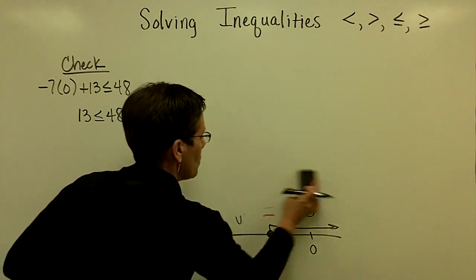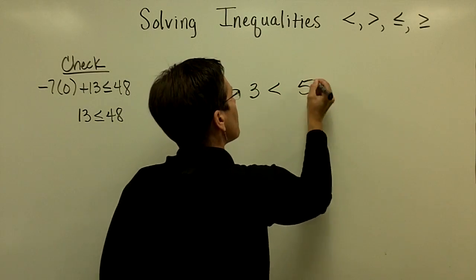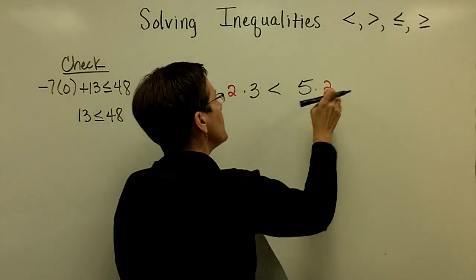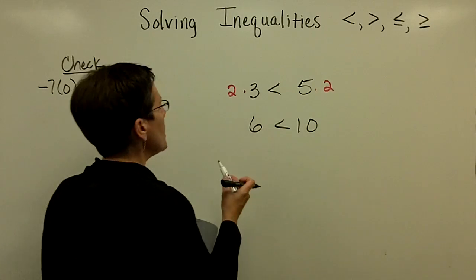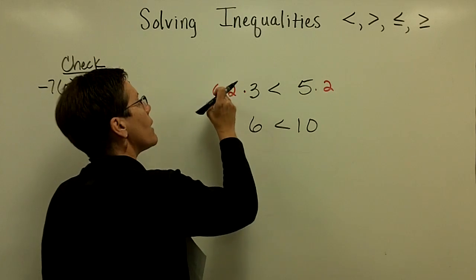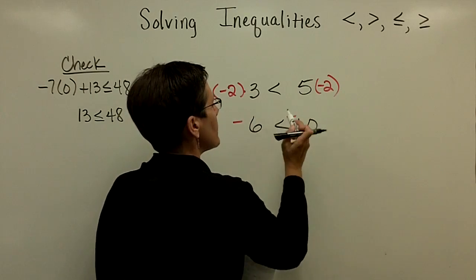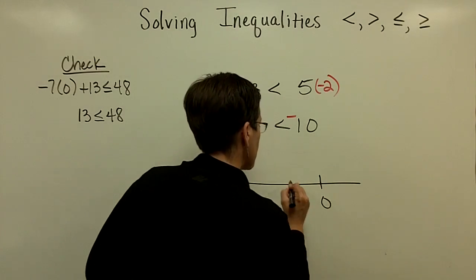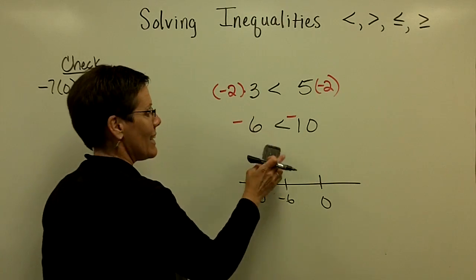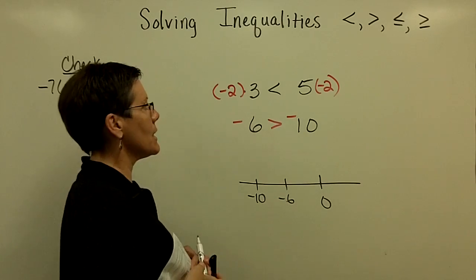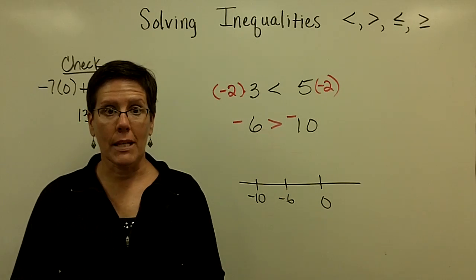Finally, here's another reason to explain why all of this is true. If I have the statement 3 is less than 5, and I multiply both sides by a positive number, I get 6 is less than 10 — that's a true statement. But if I multiply both sides by a negative number, like negative 2, I get negative 6 is less than negative 10. On a number line, negative 6 is to the right of negative 10, so negative 6 is actually greater than negative 10, not less than. That illustrates why when you multiply or divide by a negative number, you must flip the inequality symbol.